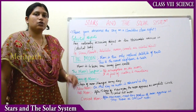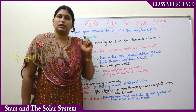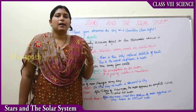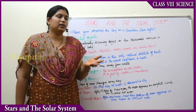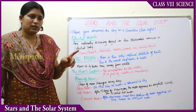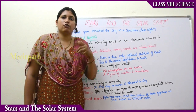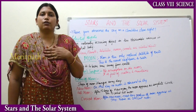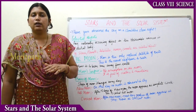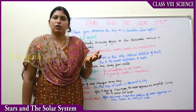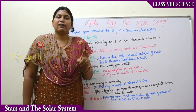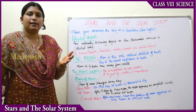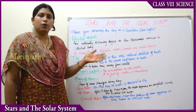Sun produces its own light, but the moon does not produce light. Whatever sunlight falls on the moon gets reflected back to us on the Earth. That is the reason we see light on the moon — it is reflected sunlight, not the moon's own light.